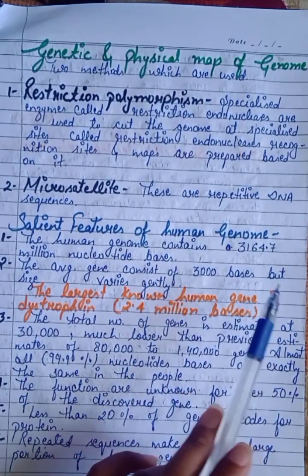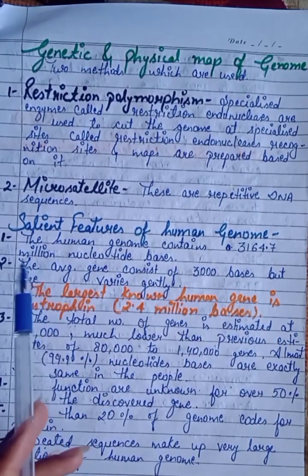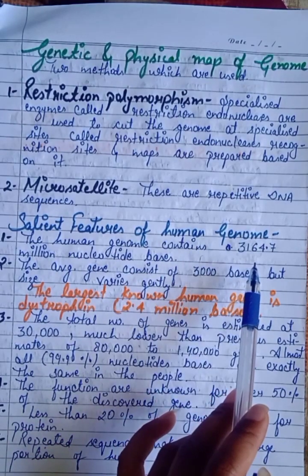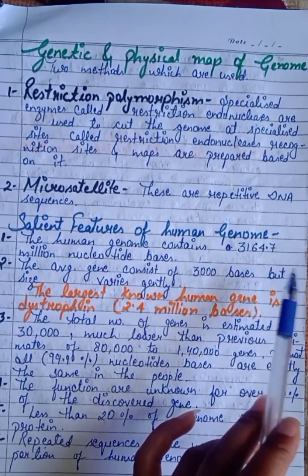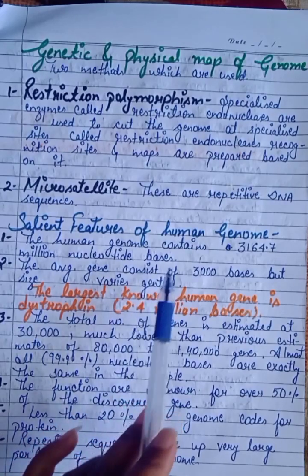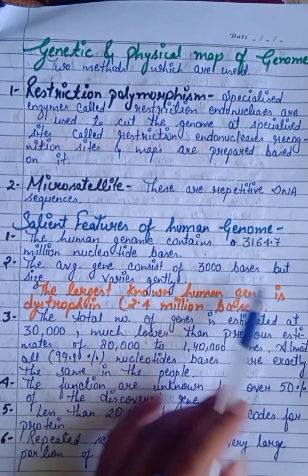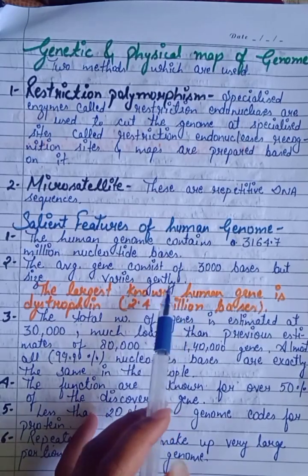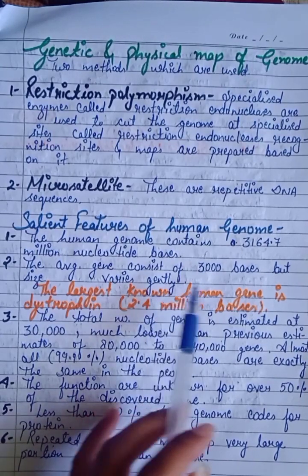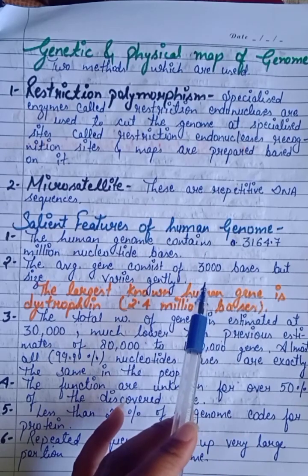Salient Features of Human Genome: The human genome contains 3,164.7 million nucleotide bases. The average gene consists of 3,000 bases but size varies greatly.